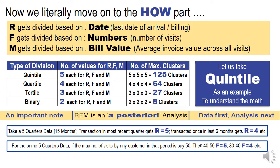Similarly, for the same five-quarter data, if the maximum number of visits by any customer in that period is say 50 — meaning nobody has come more than 50 times in that 15-month period — then clubbing 40 to 50 visit customers gives you F5, and 30 to 40 visit customers gives F4, and so on. Here again, 5 is the best value for F.